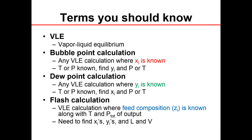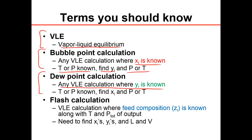VLE stands for vapor-liquid equilibrium. A bubble point calculation is any VLE calculation where xᵢ is known. In this case, T or P is known, and we're going to find yᵢ and then P or T — whichever was not given. A dew point calculation is any VLE calculation where yᵢ is known, T or P is known, and we find xᵢ and then the other P or T.